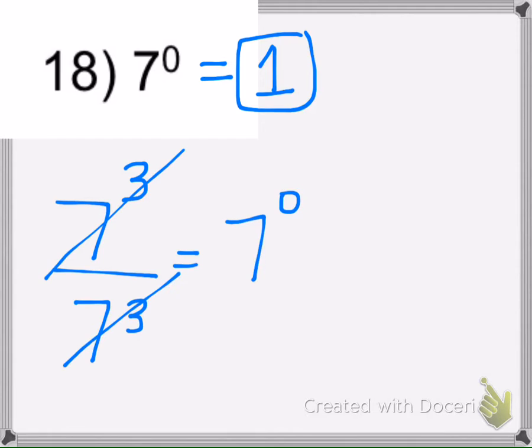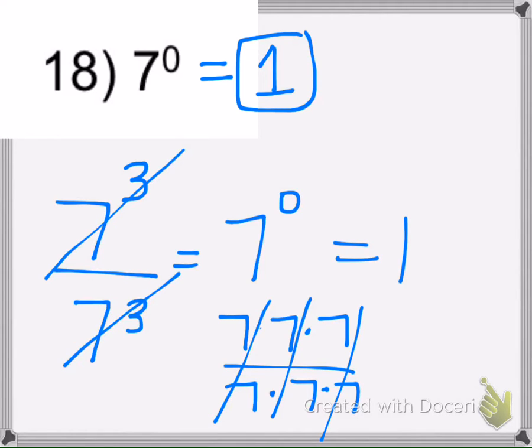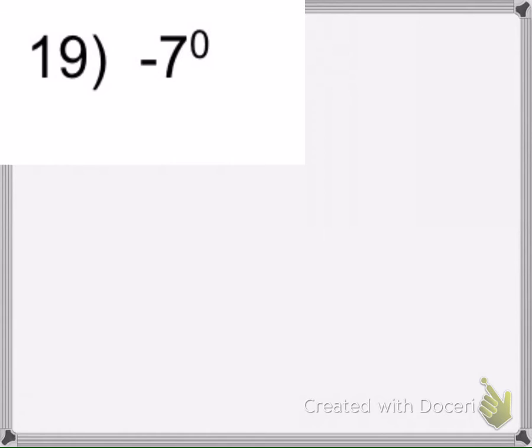Because the same thing over the same thing is 1. In other words, you'd have 3 sevens on top, you'd have 3 on the bottom, and they all make 1. So that's why it's 1.